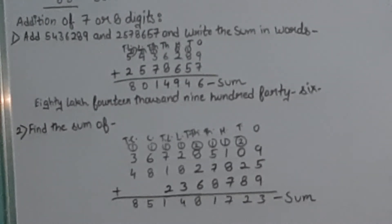Then start adding: nine plus five plus nine is twenty-three. Write down three and carry two. Eight plus two is ten, plus two is twelve. Write down two and carry one. In the same way, keep adding by taking the carry number.